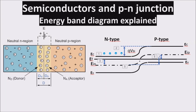In this video, we see the PN junction, which is fundamental to understand the working of very important devices like diodes and transistors. We see the physics behind the junction and the band diagram, which explains the junction energy levels.